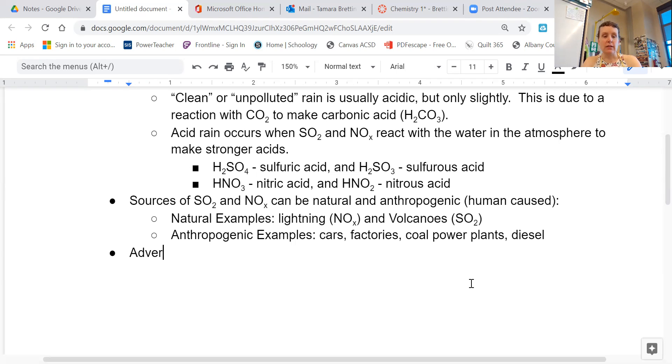There are adverse effects of acid rain. Remember, adverse means not good. So it negatively impacts plants, animals, and infrastructure. Remember, infrastructure is going to be roads, bridges, buildings. Any structures that humans have built and put in place is going to be considered infrastructure. So let's just go into those in a little bit more detail. Let's talk about plants first.